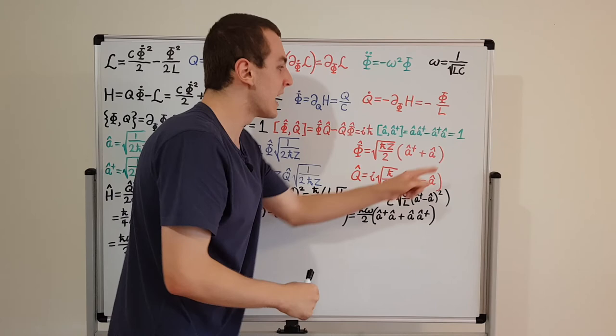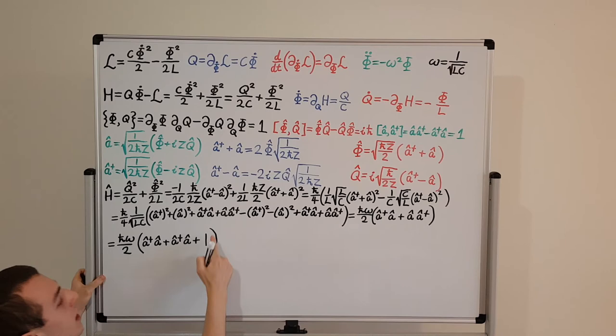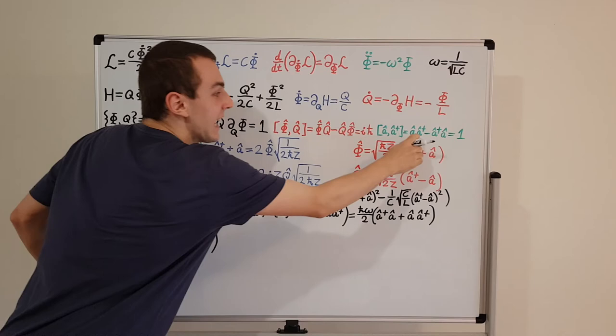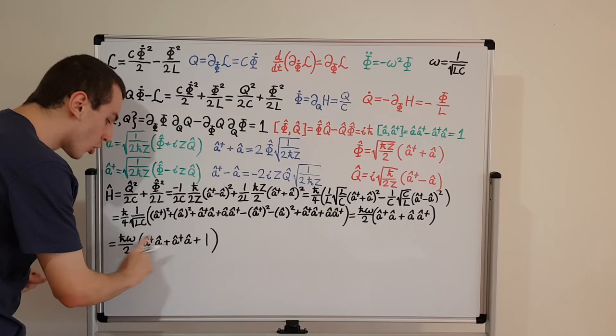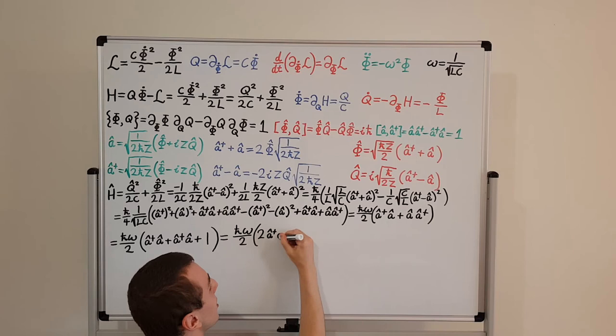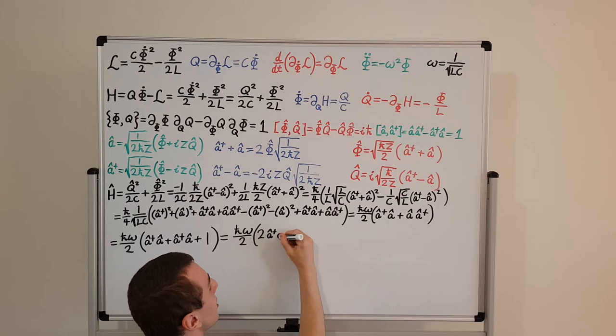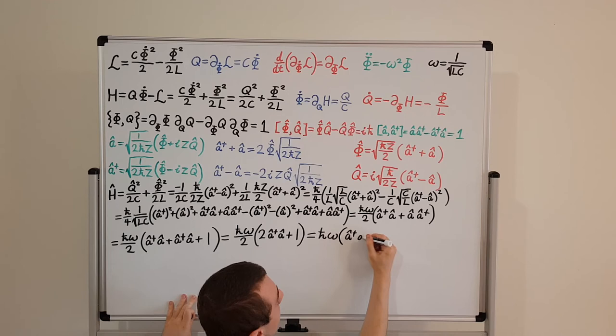So all we have to do to swap these guys is add one. That gives us a dagger a plus one. Now we have two copies of a dagger a, so we group them together: h-bar omega over two times two times (a dagger a plus one). Bringing in the factor of one half from outside gives us h-bar omega times (a dagger a plus one half).